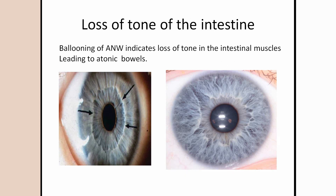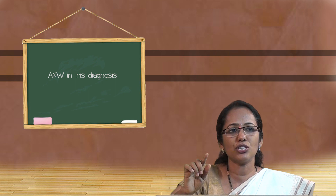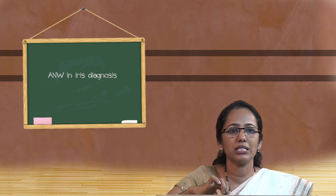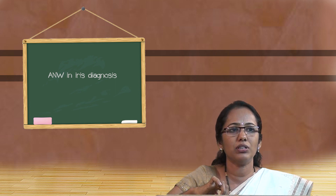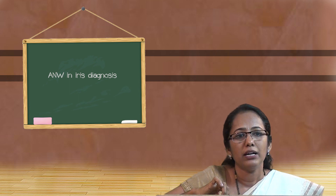This is also called ballooning of the autonomic nerve wreath. In the first picture it is normal; in the second picture, comparing the eleven o'clock position, you can see how the autonomic nerve wreath has taken a ballooning shape, going beyond its usual structure. This shows a loss of tonicity or lack of tone in bowel movements, resulting in atonic constipation or atonic bowels. This is how intestinal functions are related to the autonomic nerve wreath.